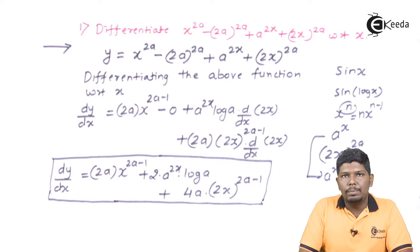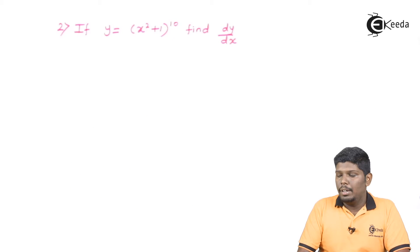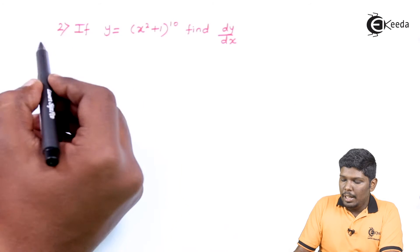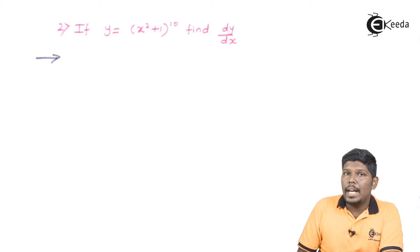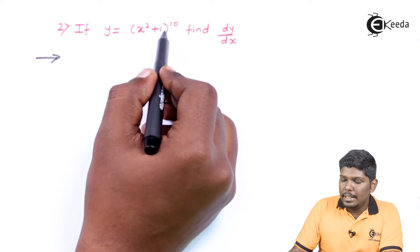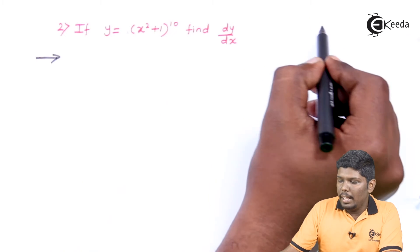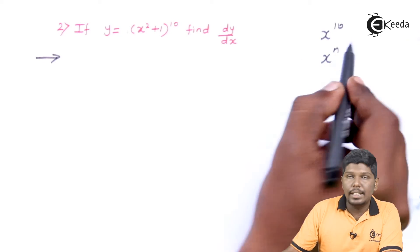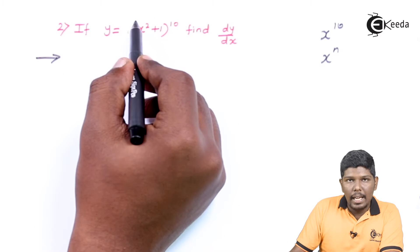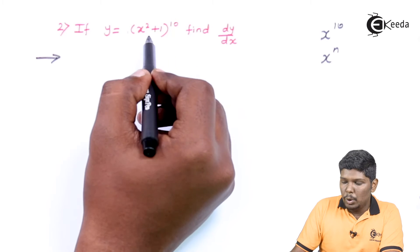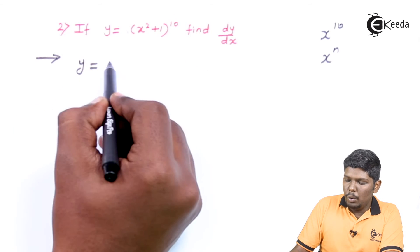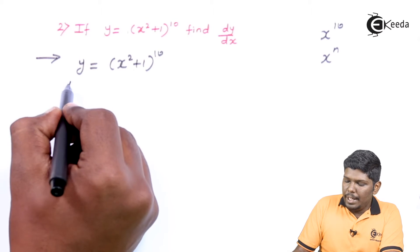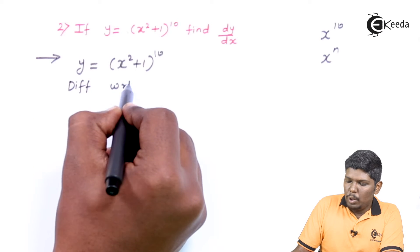Let us start the second problem. In the second problem, we have y is equal to (x squared plus 1) raised to 10; find dy/dx. This is the best example to understand composite functions. If you consider the entire bracket as x, this looks like x raised to 10, which can be solved using the formula x raised to n. Since x is replaced by (x² + 1), this is a composite function.